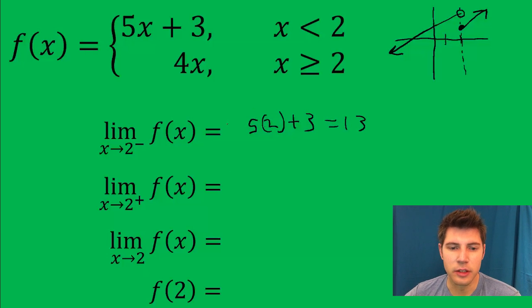Now the next one is limit as x approaches 2 from the right. Well, that means when x is greater than 2, so we're going to use this 4x. So we're just going to do direct substitution again, and we get 8.